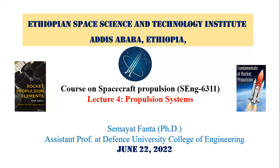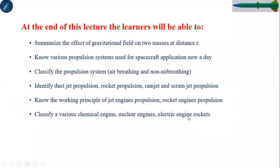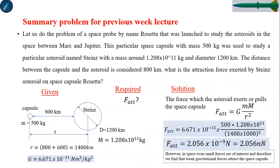Last time we saw what gravitational fields are, how we can derive the equation of gravity, and how the gravitational field is created between two masses — especially between a bigger mass and a smaller mass — in which the smaller is orbiting around the bigger mass. We discussed what the gravitational attraction force is and how we can calculate it.